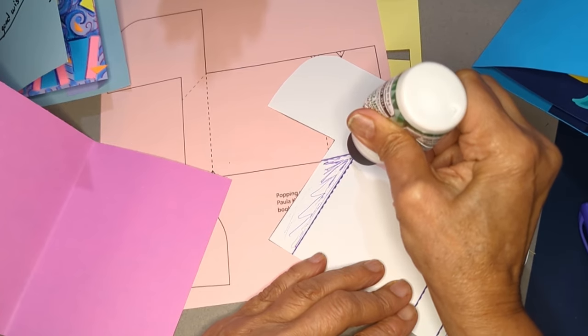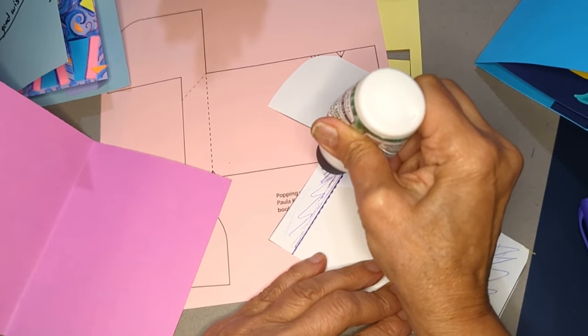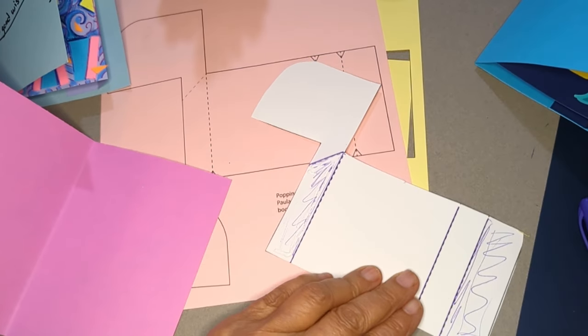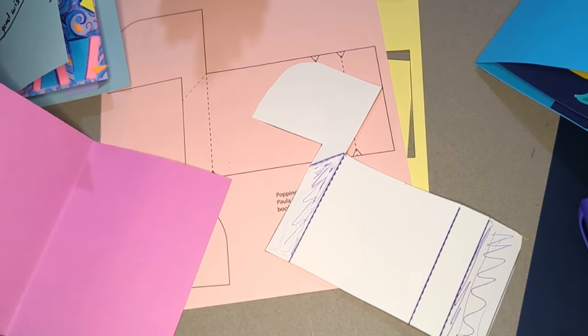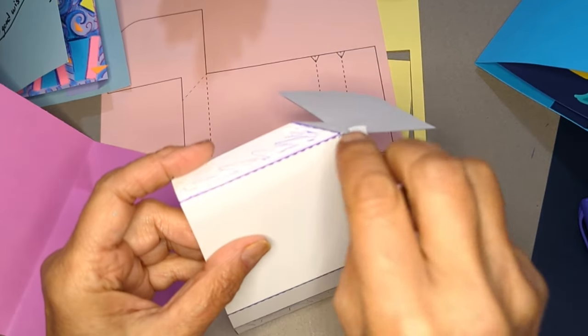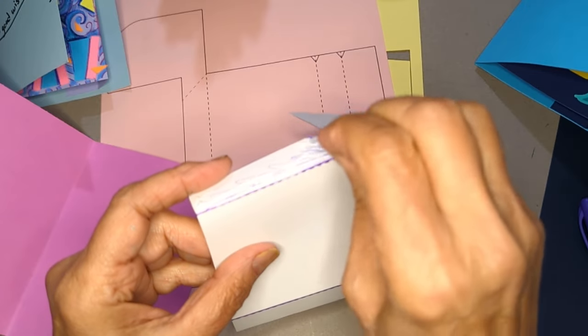And I'm going to get that glue right there next to those fold lines. Like I said I don't really care about the rest. And I don't want it to glop over so I'll take a little scrap and just smooth that out.